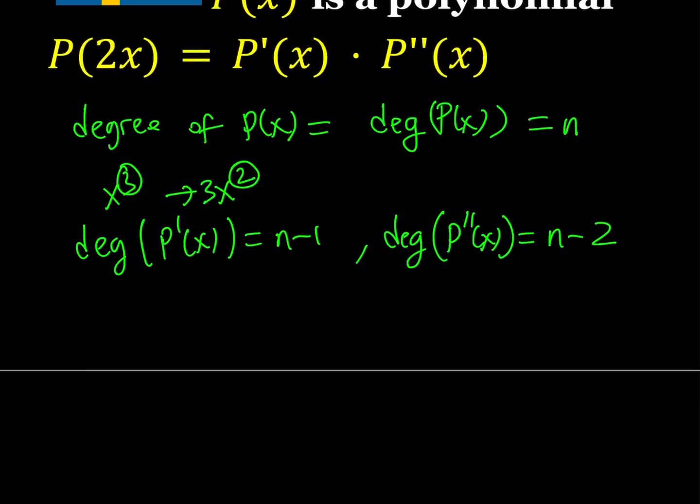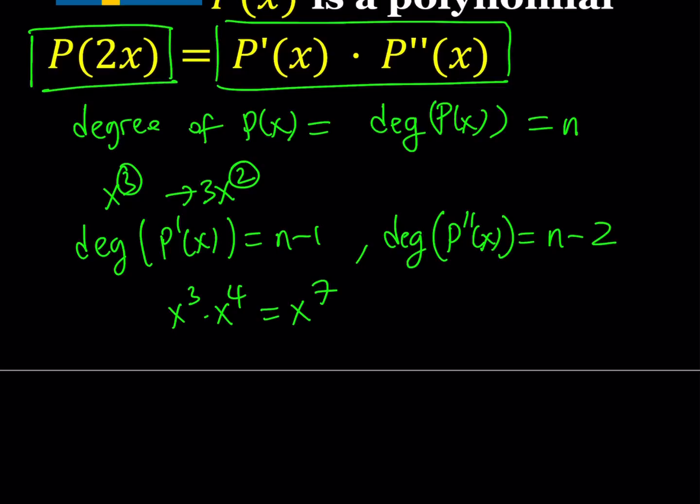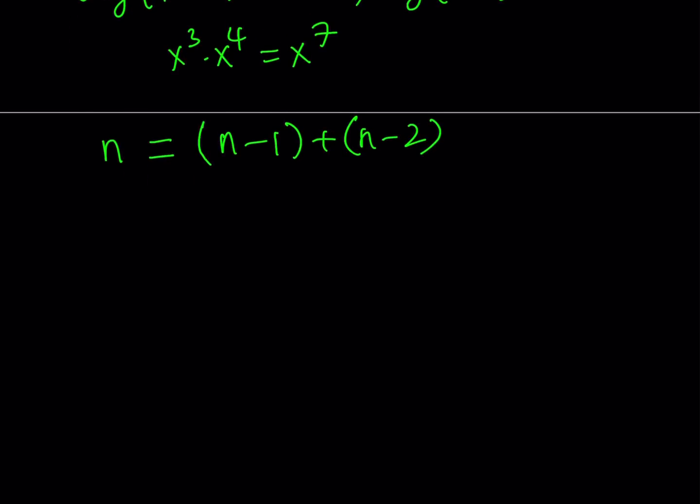Now what happens if you multiply two polynomials? You basically add the degrees. So on the left hand side we have a polynomial P(2x) which has degree n. On the right hand side we have two polynomials: one with degree n-1 and the other with degree n-2. So n = (n-1) + (n-2). This equation holds because when you multiply two polynomials you add their degrees.